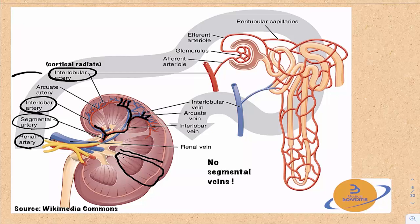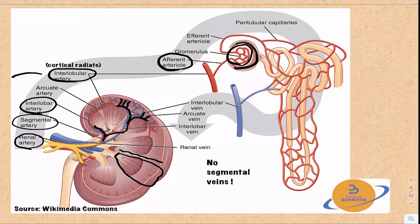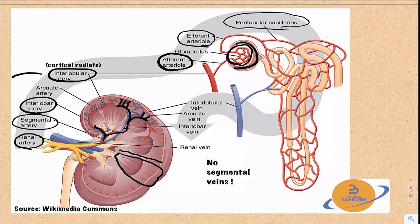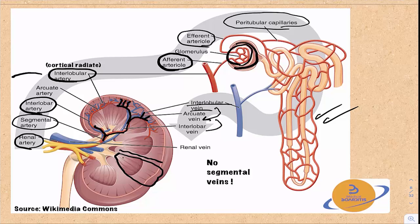The interlobular arteries give off the afferent arteriole, which enters the renal corpuscle and gives off a tuft of capillaries called the renal glomerulus. The glomerular capillaries reunite to form the efferent arteriole, which branches again into peritubular capillaries that run around the renal tubules and contribute to reabsorption and secretion. The peritubular capillaries reunite as interlobular veins, which drain into arcuate veins, then interlobar veins, then the renal vein. Note: there are no segmental veins, unlike the arterial side.